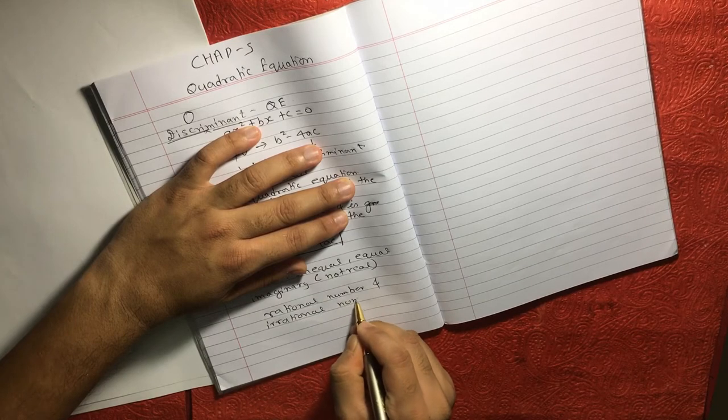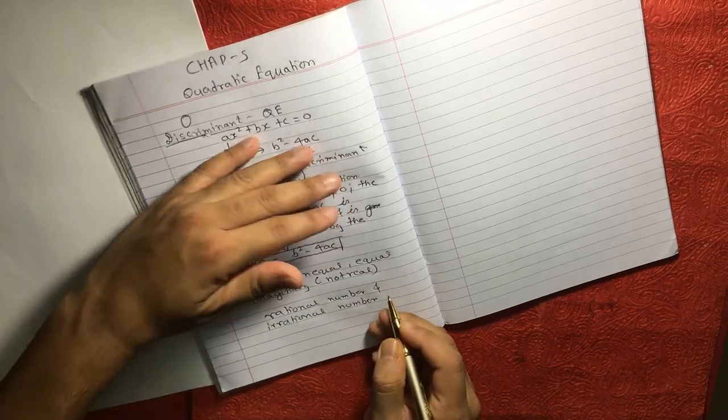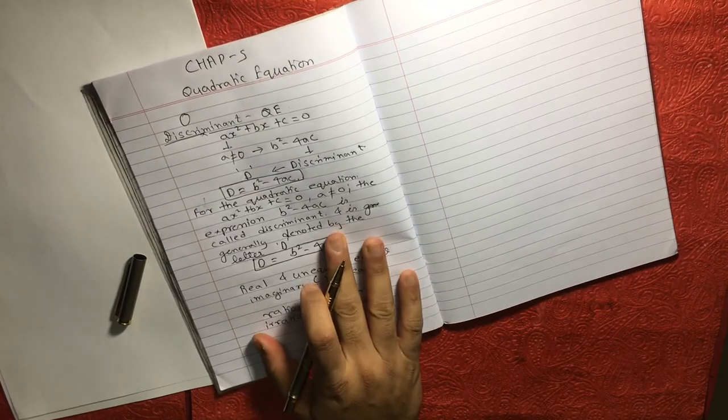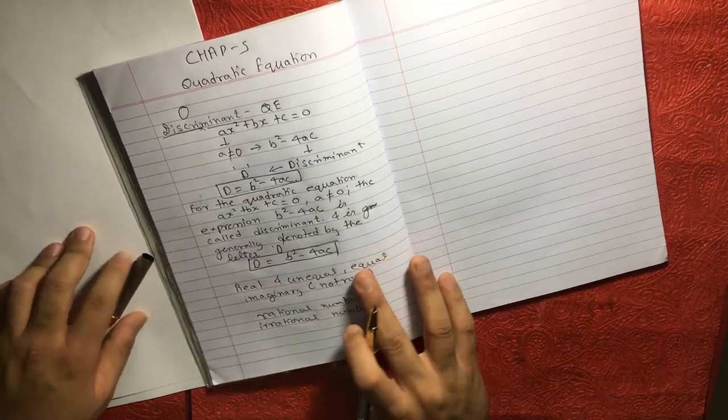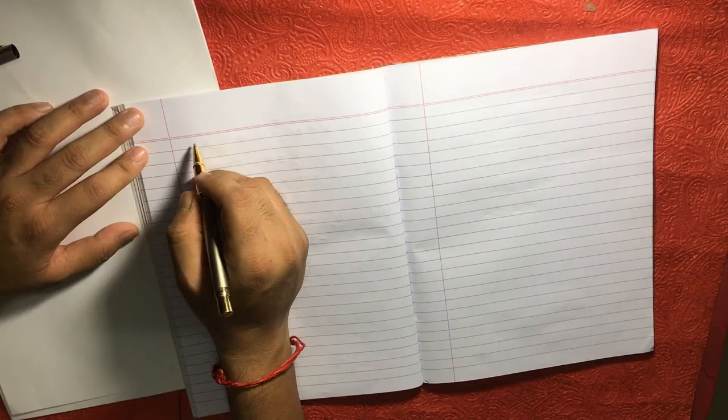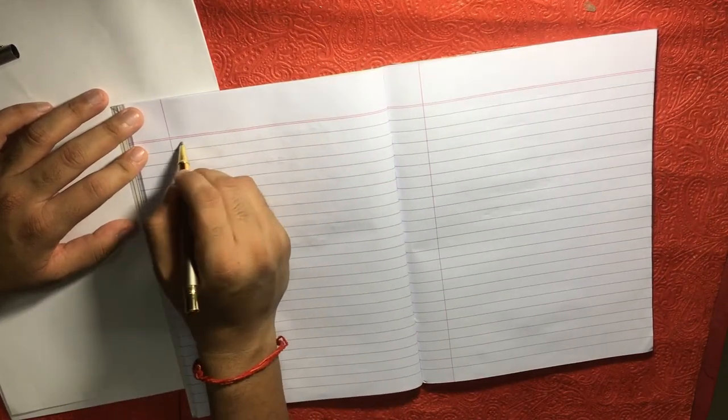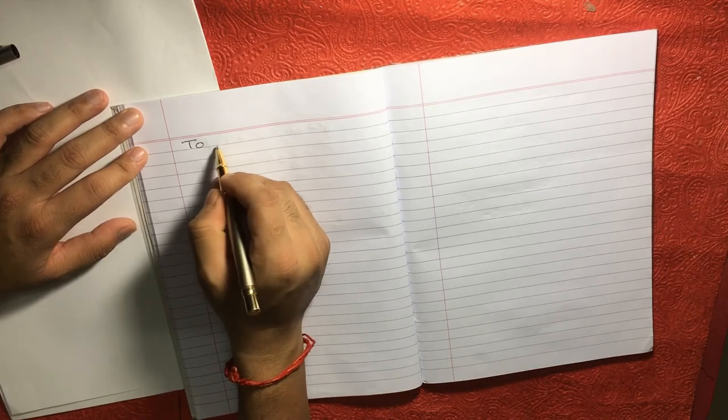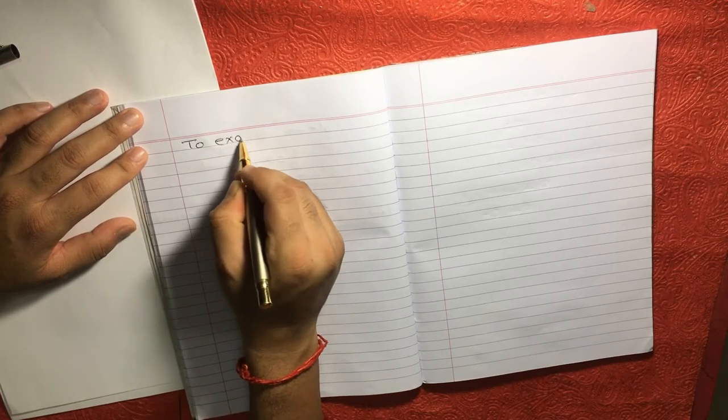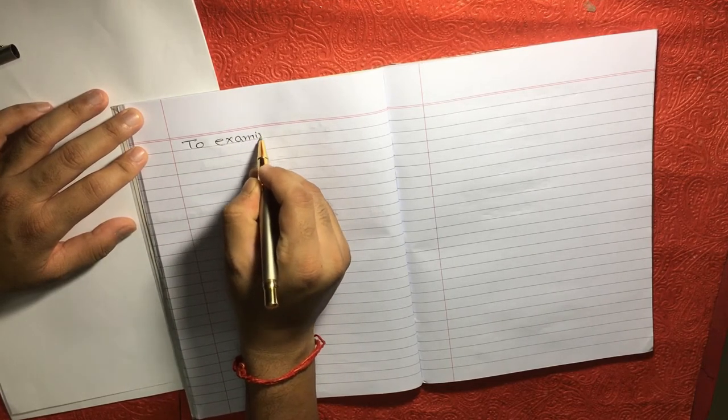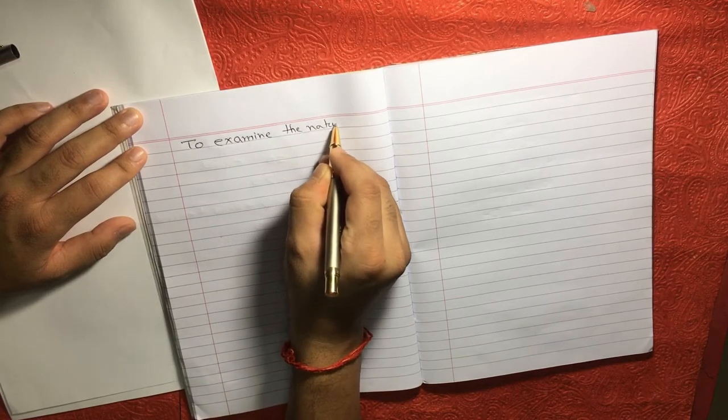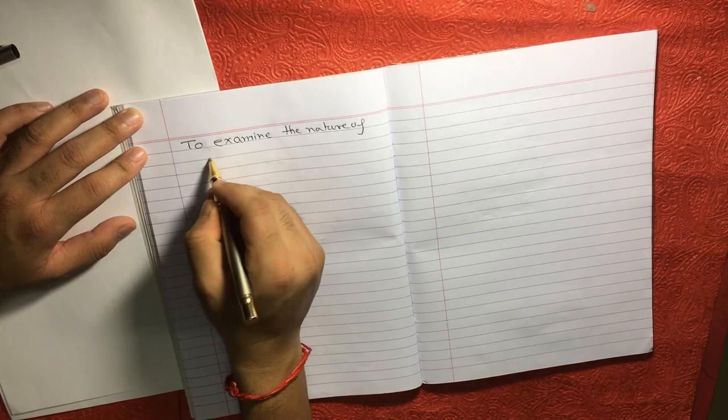And friends, there is something called rational number as well and there is one more term called irrational number. I am going to quickly explain you this. Now another thing you need to understand before solving this kind of equation is you need to examine the nature, the nature of roots.